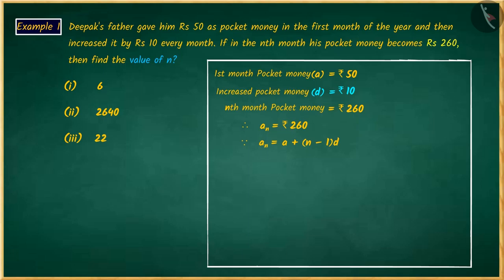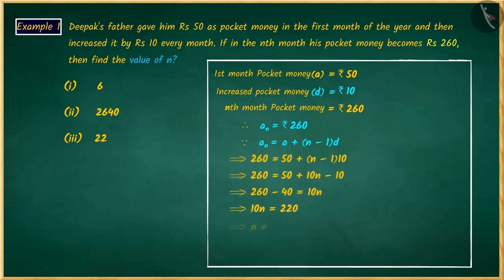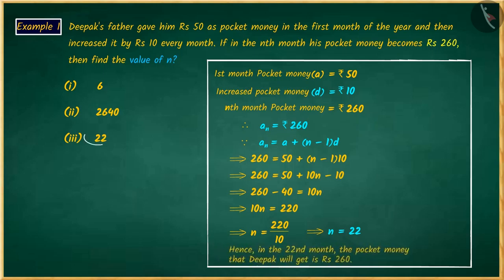Hence, with the help of the information provided and using the formula for the nth term or general term, we can solve the problem. The value of n comes out to be 22. In this situation, we can say that in the 22nd month, Deepak's pocket money will be 260 rupees.